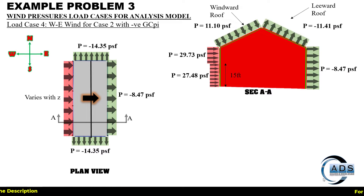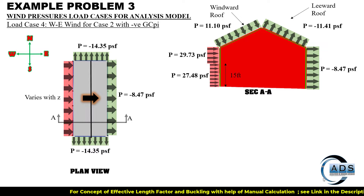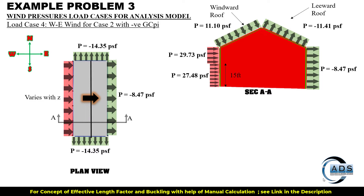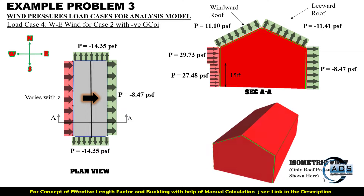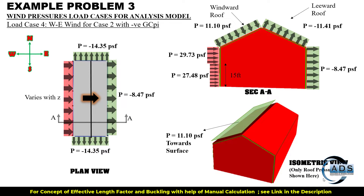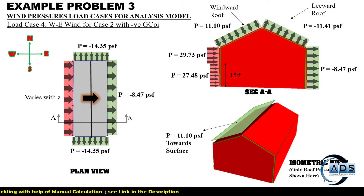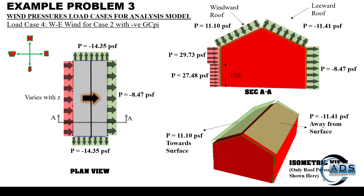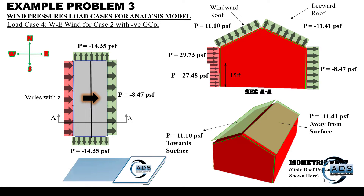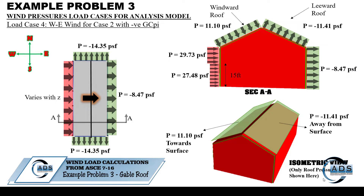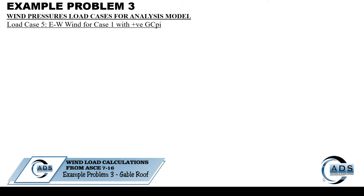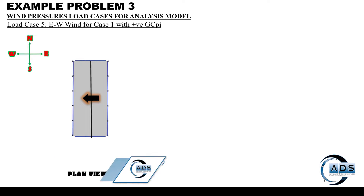For load case 4, the windward roof pressure now has a positive magnitude. In the isometric view, this pressure is towards the surface rather than away from it. However, the leeward roof has a negative magnitude of pressure so it acts away from the surface. Similarly for load case 5 when wind is blowing from west to east.